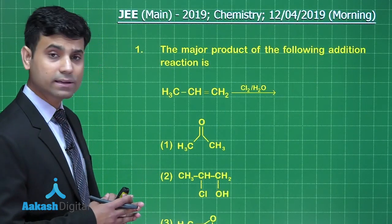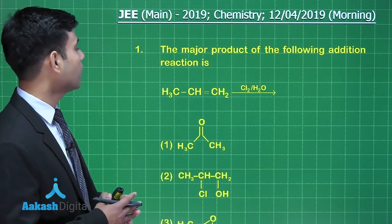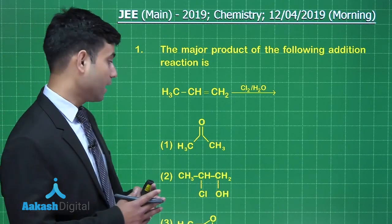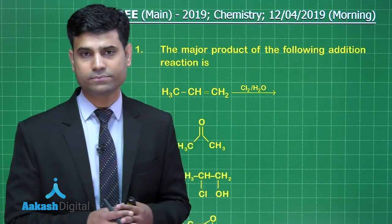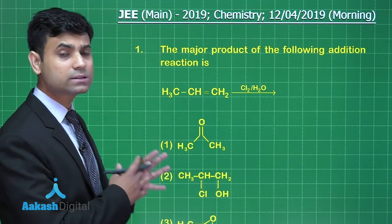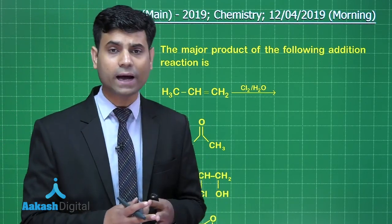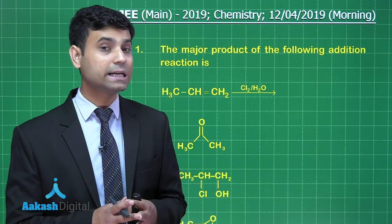This is the first question which says the major product of the following addition reaction is: we have propene which reacts with chlorine in presence of water. Students, this question or this reaction belongs to hydrocarbon chapter. Here addition of HOCl will take place through the formation of cyclic chloronium ion or cyclic halonium ion.